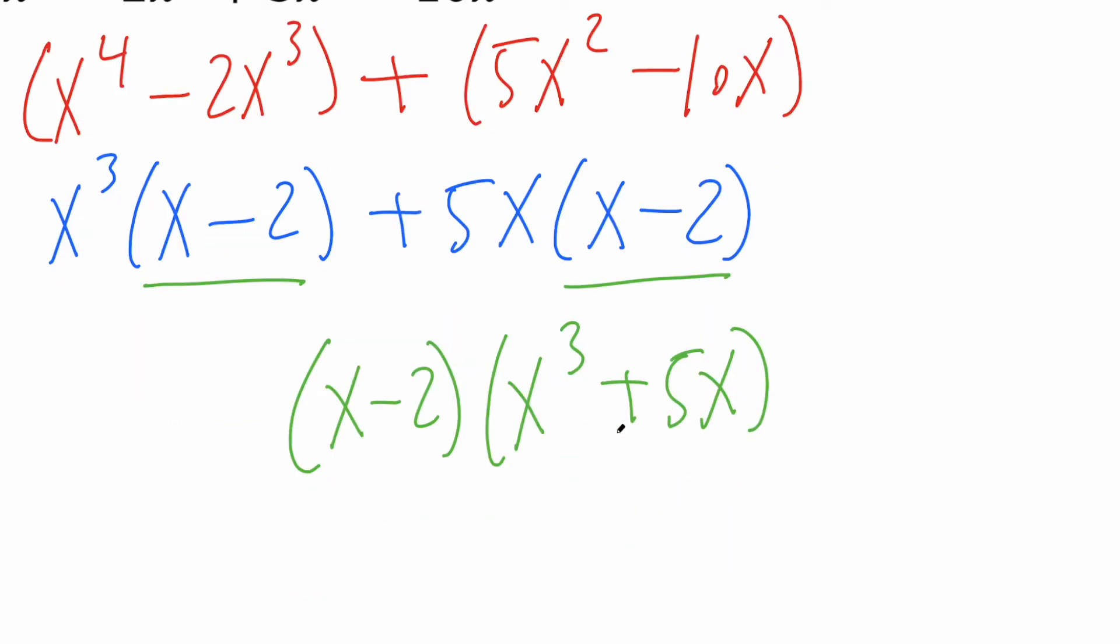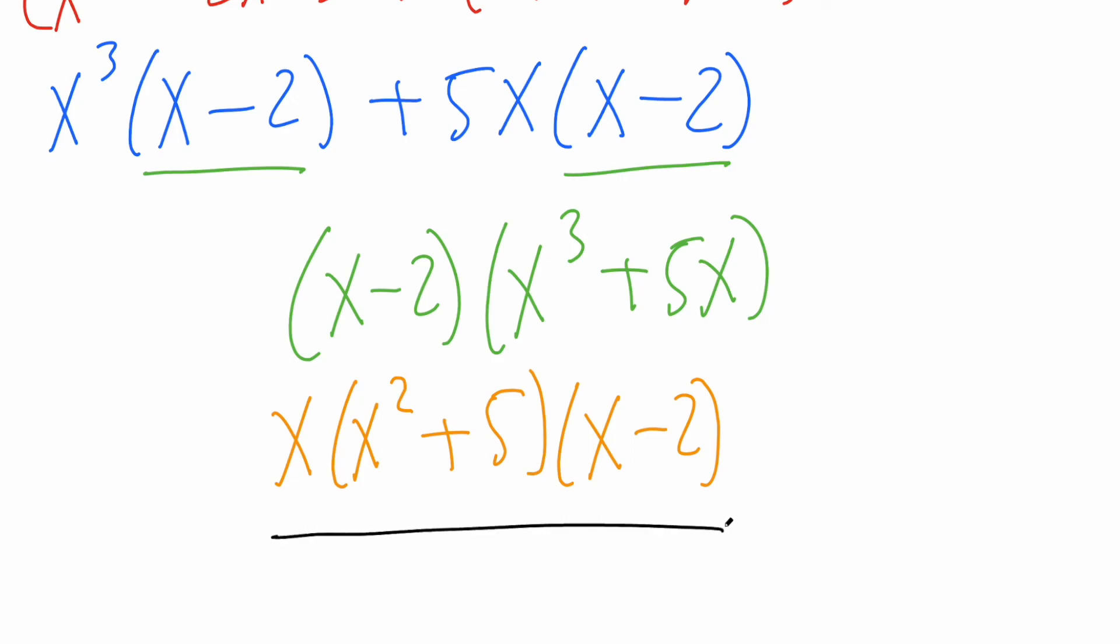Now for this problem there's one more step because here we have an x cubed, here we have a 5x. So you could take out an x and we would get x parentheses x squared, because x times x squared is x cubed, plus 5 because x times 5 is 5x, close parentheses, parentheses x minus 2, close parentheses. And this right here is our final answer.